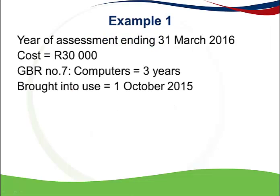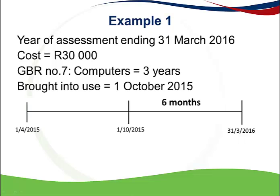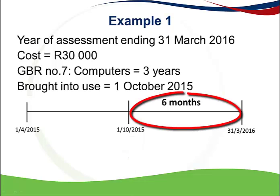Let's look at an example. The company has a year end of 31 March 2016. It buys computers with a cost of 30,000 Rand and brought them into use on 1 October 2015. General Binding Ruling number 7 determines that computers are written off over 3 years. Plotting this on a timeline, the asset was brought into use on 1 October, which falls in the current year of assessment, but was only used for 6 months during that year.